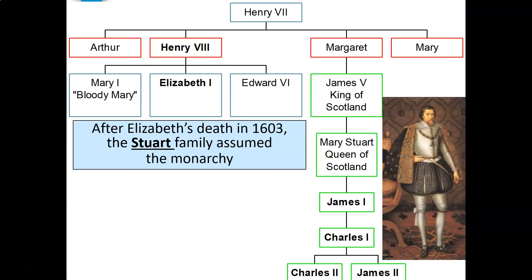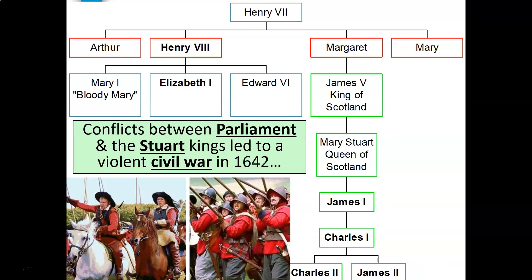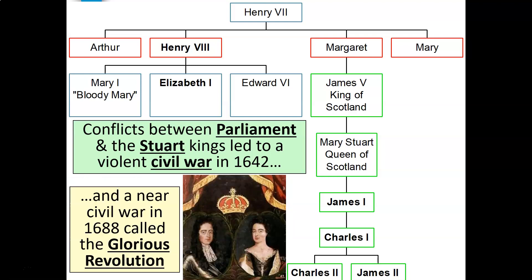After Elizabeth's death in 1603, the Stuart family assumed the monarchy in England. Unlike Elizabeth, the Stuart kings refused to work with Parliament and tried to create an absolute monarchy in England. Conflicts between Parliament and the Stuart kings led to a violent civil war in 1642 and a near civil war in 1688, which is known as the Glorious Revolution.